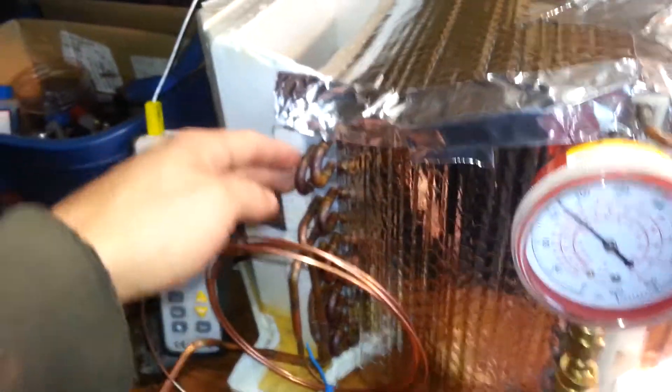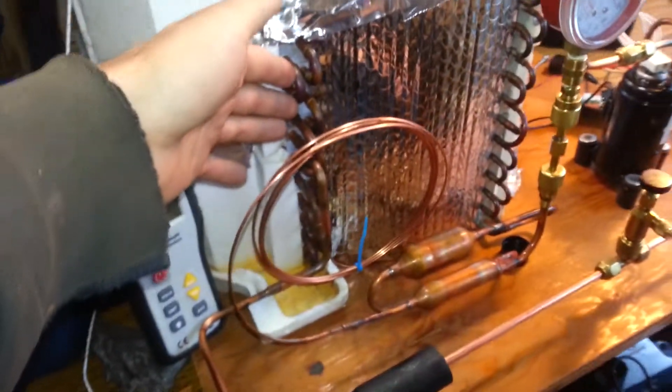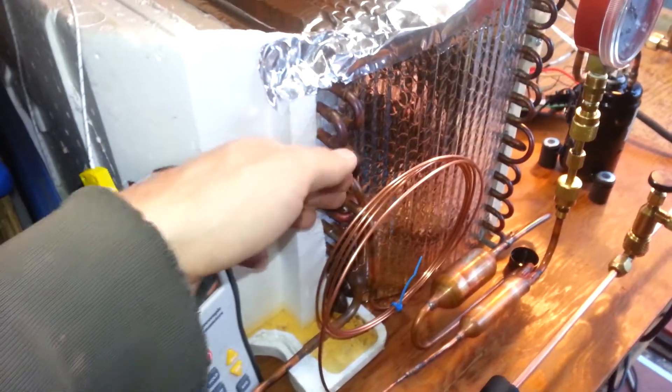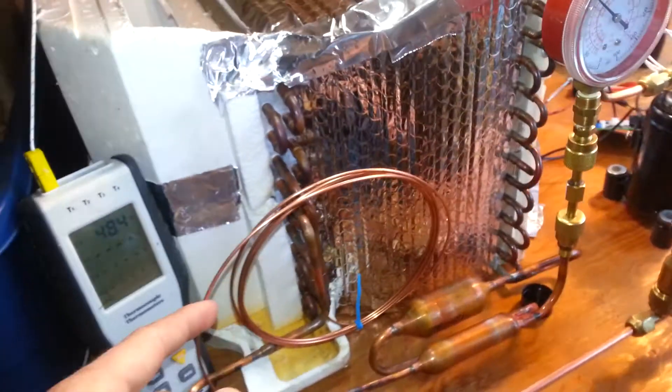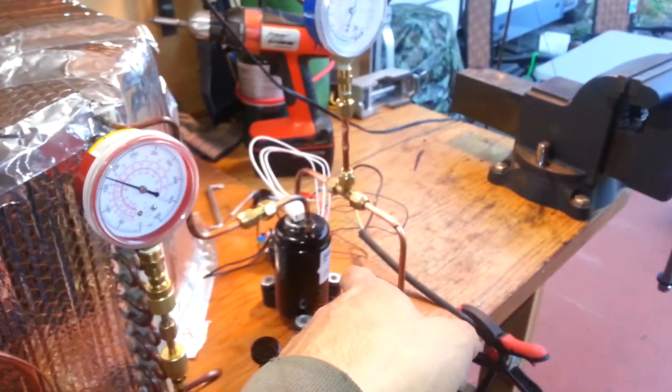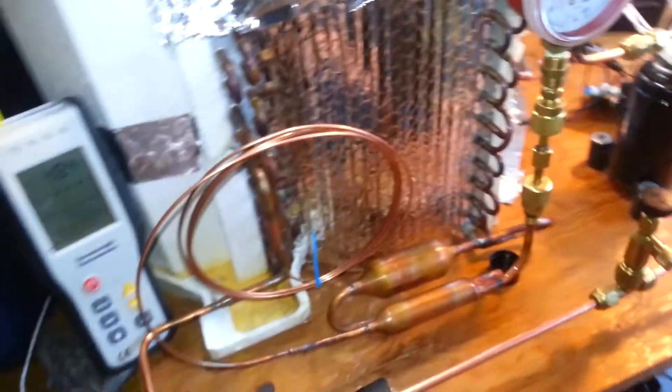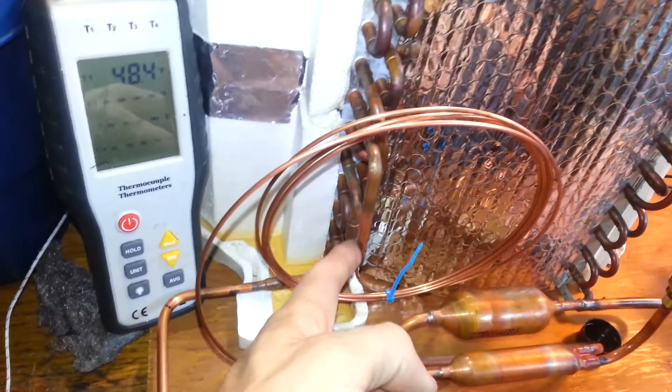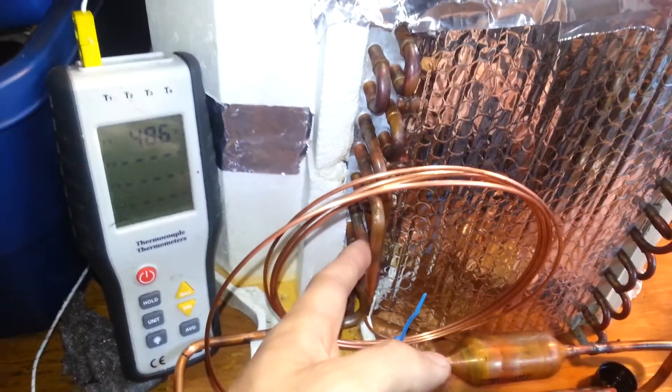However, the evaporator isn't very well utilized. So I'm starting to wonder if I'm getting a large pressure drop across the evaporator. I'm taking my suction pressure close to the compressor. I am, at this point, very curious what the pressure is right here after the capillary tube in the inlet of the evaporator.